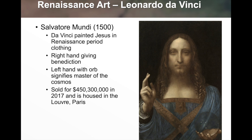Here's da Vinci's Salvator Mundi, painted around 1500. Da Vinci painted Jesus in Renaissance-period clothing — not first-century Jewish attire. You can see the emotion as Jesus gives the benediction, the movement in the curls of his hair, and the folds of the fabric. The right hand is giving a benediction; the left hand holds an orb signifying that Jesus is the master of the cosmos. This painting sold for just over $450 million in 2017 and is housed in the Louvre in Paris.